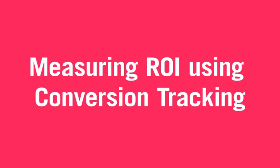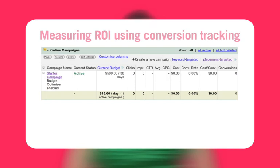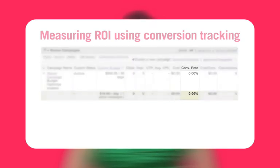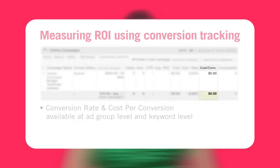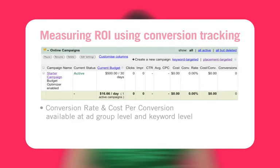Measuring ROI using conversion tracking. Once you've set up conversion tracking, new columns including conversion rate and cost per conversion will appear in your campaign summary page at the ad group level and keyword level.